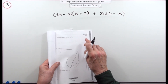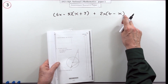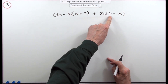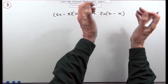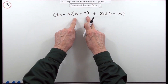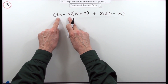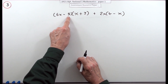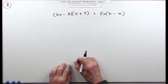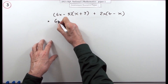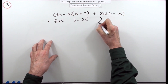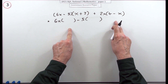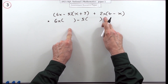Question three, for three marks: expand and simplify this expression. There's one multiplication where 2x multiplies everything in its bracket. But here there's a bracket times a bracket — both terms in the first bracket want to multiply both terms in the second. So 6x multiplies both, and 5 multiplies both. You could spell that out as 6x times the bracket minus 5 times the bracket, but it's better to just put them all down together.